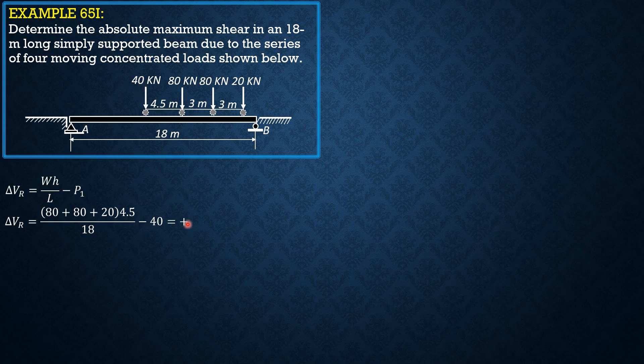The sign is positive, so it is still increasing. Next we position the second 80 kilonewton load over A. So our P₁ is 80, our h is 3, and our W would only be 80 plus 20, the two loads remaining on the span.